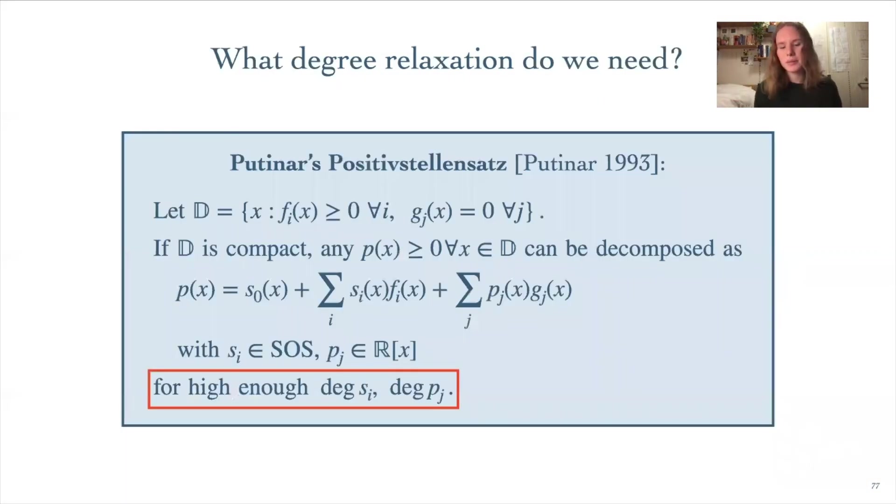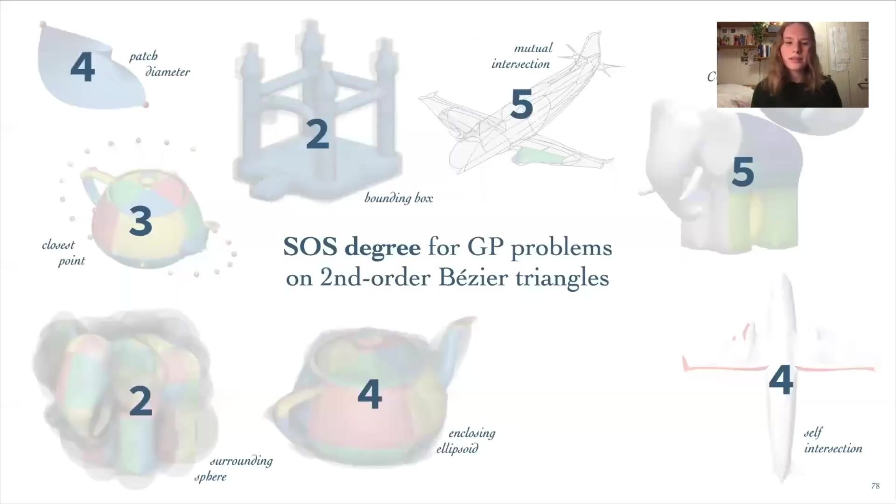One thing we have to consider in our implementation is the degrees we use for the polynomials we use in our relaxation. The result with the Positivstellensatz includes this statement that it only holds for arbitrarily high degrees of our relaxation polynomials. I'll talk now a little bit about how we can actually choose these degrees. We experimentally determined the degrees needed for different problems on certain patch types. So here I'm showing the degrees we found for various problems on second-order Bézier triangles. These degrees were determined to be the lowest degree needed, such that the answers we obtained always match the answers from our super-dense linearization. Compared to the arbitrarily large degrees of the Positivstellensatz we might need, these degrees are really surprisingly quite low, an amazing result that isn't quite explained with existing SOS theory.